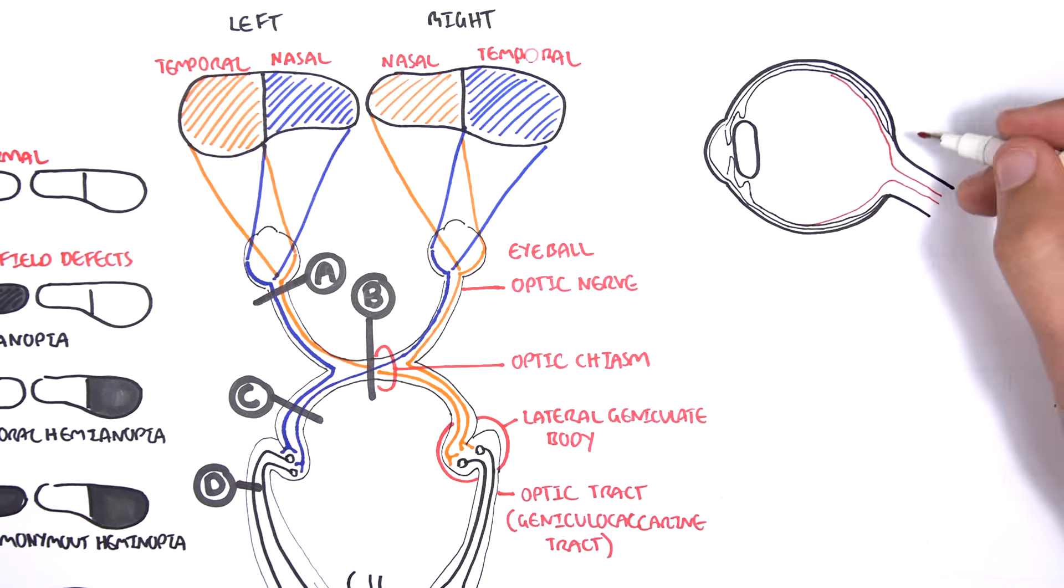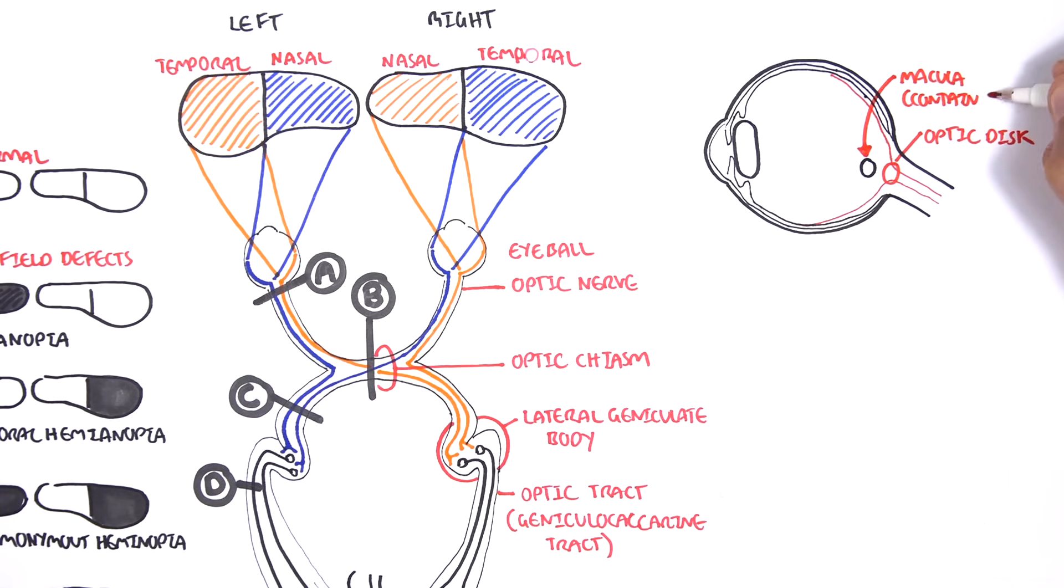So here is the optic disc where the optic nerve and vessels of the eyeball pass through. Here is an area within the eyeball at the very back called the macula. Now the macula contains what's known as a fovea, which is an area with a lot of pigmented cells called cones.